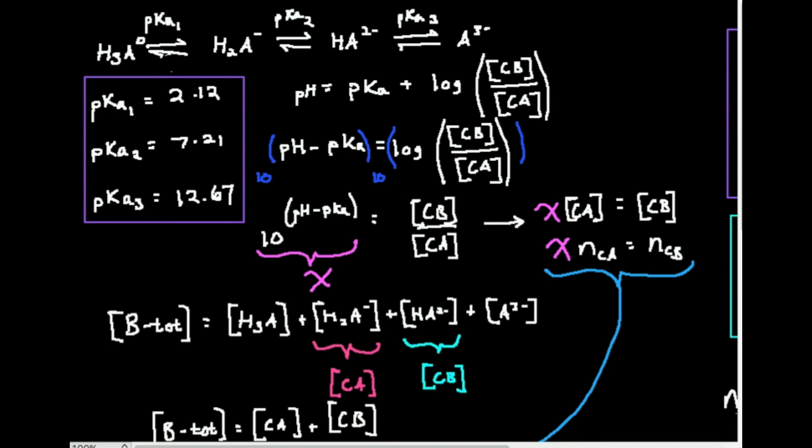Welcome back to Buffers in Biochemistry. My name is Kevin Tolkoff. In this video, we're going to talk about how, if you know the pH that you want a buffer to be at and you know the pKa that's applicable for that particular buffer system, how do you calculate the concentration of the conjugate base and the concentration of the conjugate acid in the buffer?